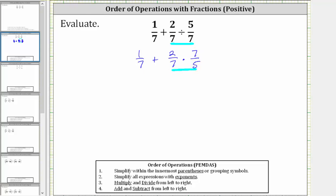And now we multiply. Normally we simplify before multiplying, so let's write this as 1 seventh plus. To multiply fractions, we multiply the numerators and denominators. So let's write the product as two times seven over seven times five.